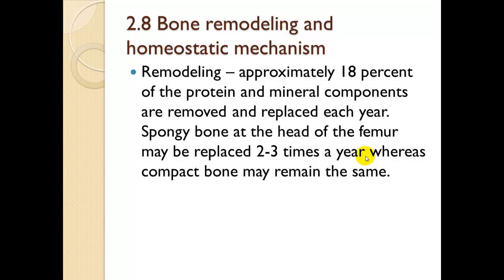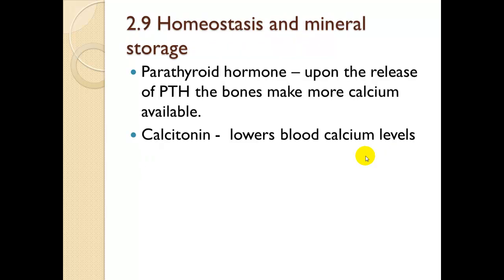Bone remodeling and homeostasis: approximately 18% of protein and mineral components are removed and replaced each year. Spongy bone at the head of the femur may be replaced two to three times a year, while compact bone changes less unless fractured. Parathyroid hormone causes bones to make more calcium available by partially dissolving themselves. Calcitonin lowers blood calcium levels by storing calcium back in the bones instead of releasing it into the bloodstream.